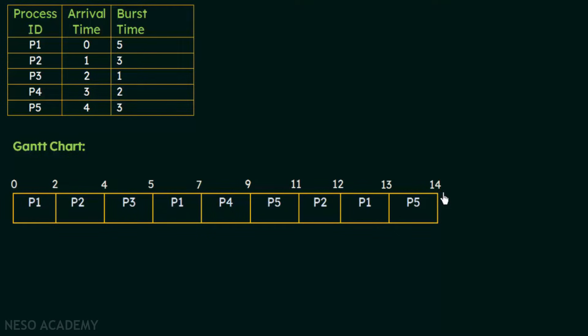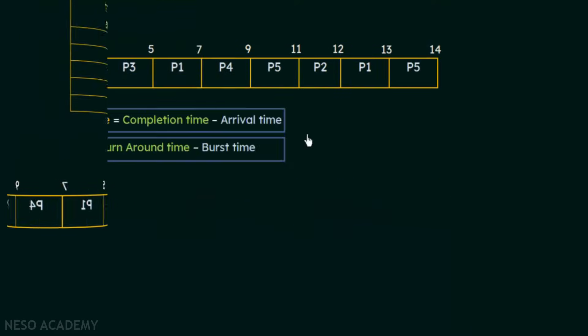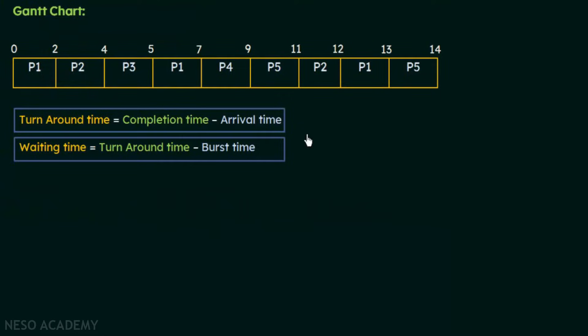With this Gantt chart, we will first calculate the turnaround time and then the waiting time for all processes one by one, and then calculate the average turnaround and average waiting times. Here are the formulas we have already discussed. The turnaround time is the completion time minus the arrival time. The completion time can be found from the Gantt chart — we just have to find the last occurrence of each process.